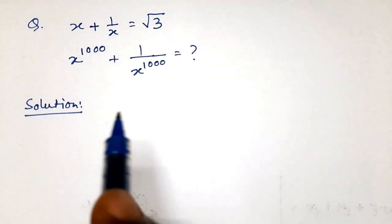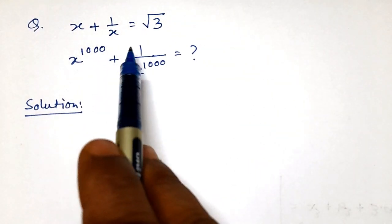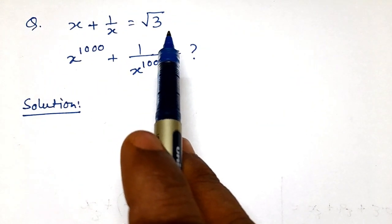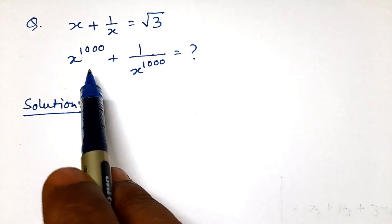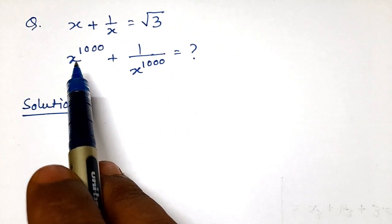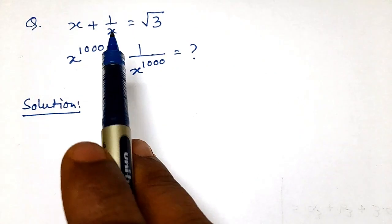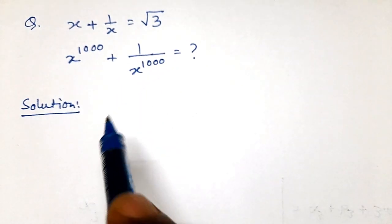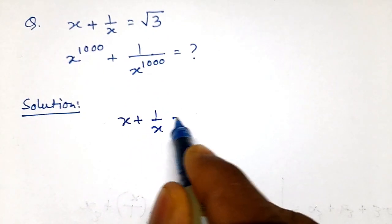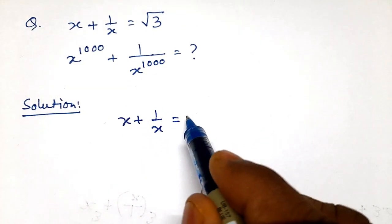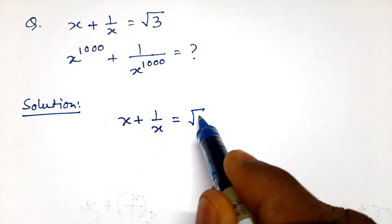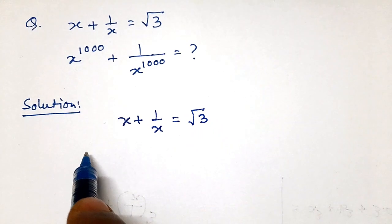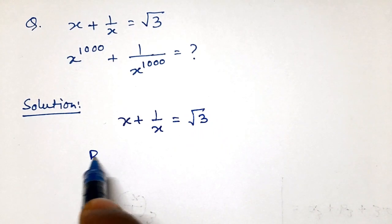We have a problem: x plus 1 by x is equals to root 3. We have to find the value of x to the power 1000 plus 1 by x to the power 1000. We will start with the given value x plus 1 by x equals root 3.